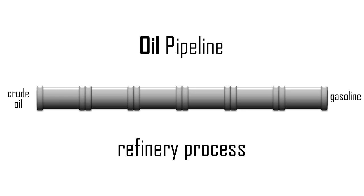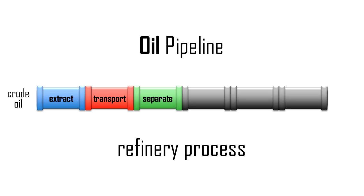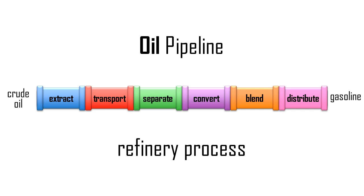We can view an oil pipeline as a refinery process of tasks where the output of one task is the input of the next. First, crude oil is pumped from an oil well. The crude is transported from the well to a refinery. Distillation uses heat to separate the crude oil into different components. A conversion process changes the chemical makeup of the distilled components. Several converted components are brought together to create gasoline, which is then shipped to a warehouse and onto local gas stations for consumption.